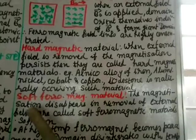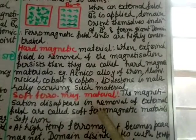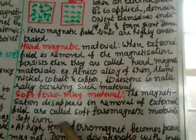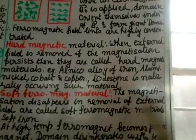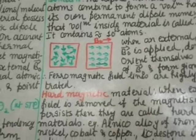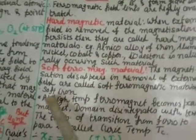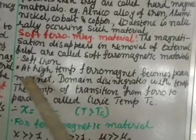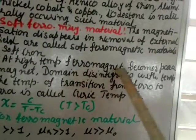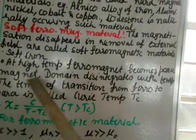Soft ferromagnetic materials: the magnetization disappears on removal of the external field; these are called soft ferromagnetic materials. If you remove the external magnetic field and the domains return to their original positions, you consider them soft ferromagnetic materials. An example is soft iron.